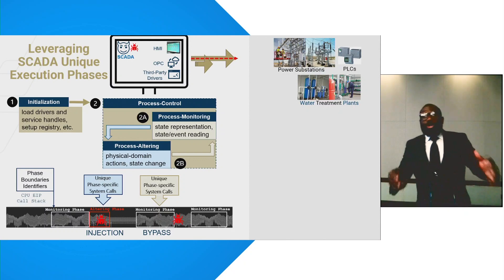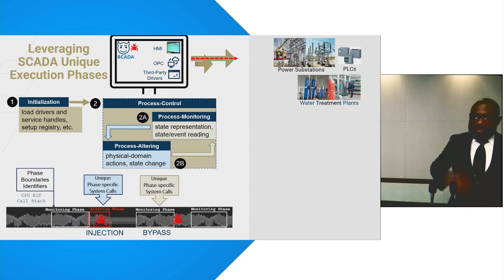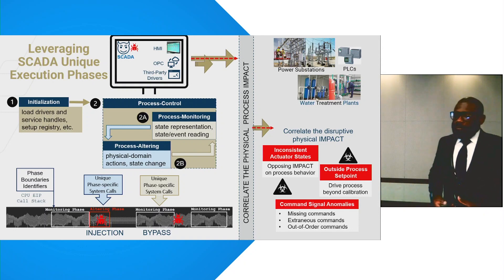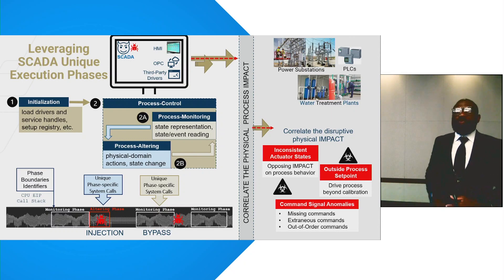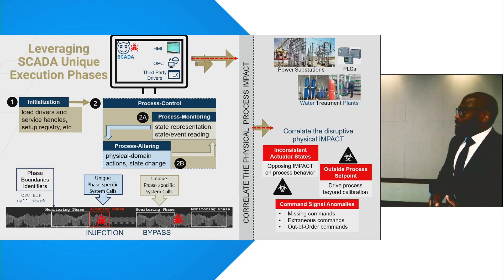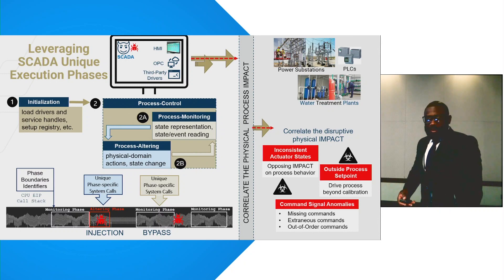To correlate SCADA with the physical side, we analyzed the physical impact of violating the SCADA execution phases. We identified two physical anomalies: first, when you violate SCADA execution phases, there are times when actuator states would be opposing to the trajectory of the process or inconsistent with each other — we call this inconsistent actuator states. Second, the process has been driven outside the calibrated set point.